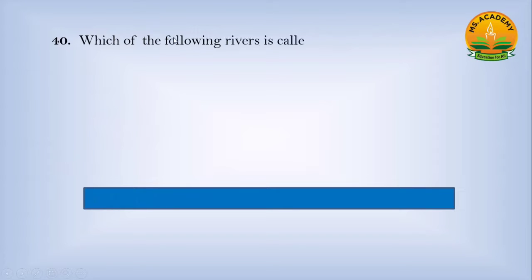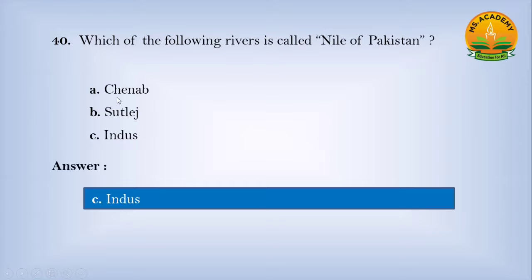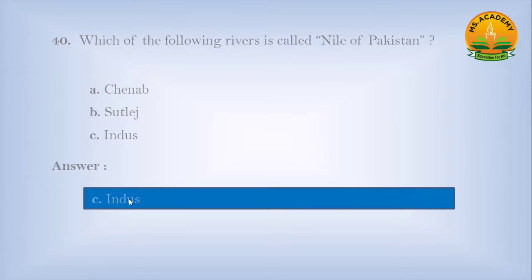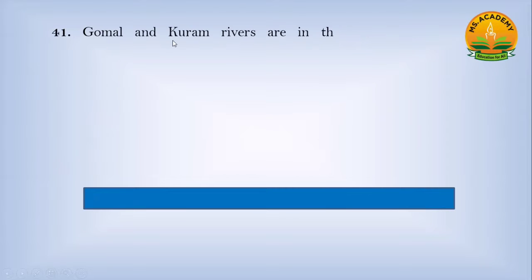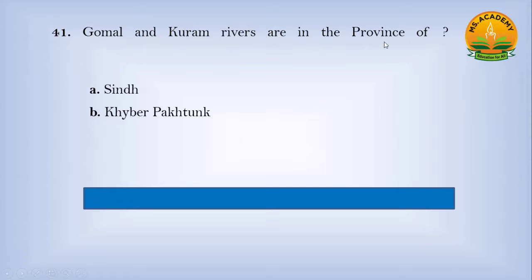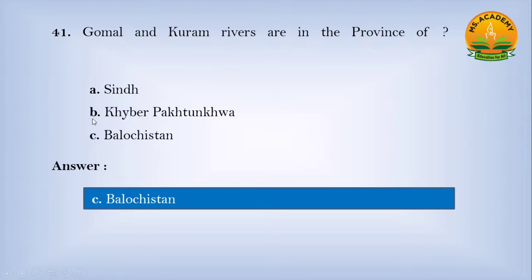Which of the following rivers is called the 'Mile' of Pakistan? Option A Chenab, option B Sutlej, option C Indus — answer is C, Indus. Gomal and Kurram rivers are in the province of: option A Sindh, option B Khyber Pakhtunkhwa, option C Balochistan — answer is C, Balochistan.